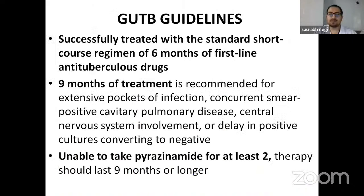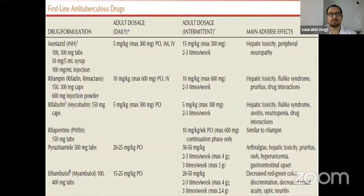Guidelines for genitourinary TB: it can be treated with a short course of six months of first-line anti-tubercular drugs. Certain situations require nine months of treatment: extensive pockets of infection, concurrent smear-positive cavitary pulmonary TB, central nervous system involvement, or delay in positive culture converting to negative. Inability to take pyrazinamide for at least two months can prolong duration to nine months or longer. First-line anti-tubercular drugs include isoniazid, rifampicin, rifabutin, rifapentine, pyrazinamide, and ethambutol.